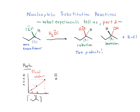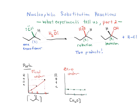Now let's look at what happens to the rate when we change the concentration of water and keep the concentration of 2-chlorobutane the same. We see that the rate actually doesn't change at all. Whether we double, triple, or quadruple the concentration of water, the rate doesn't change whatsoever. So we would call this reaction zero order in water, and overall it is a first order reaction.